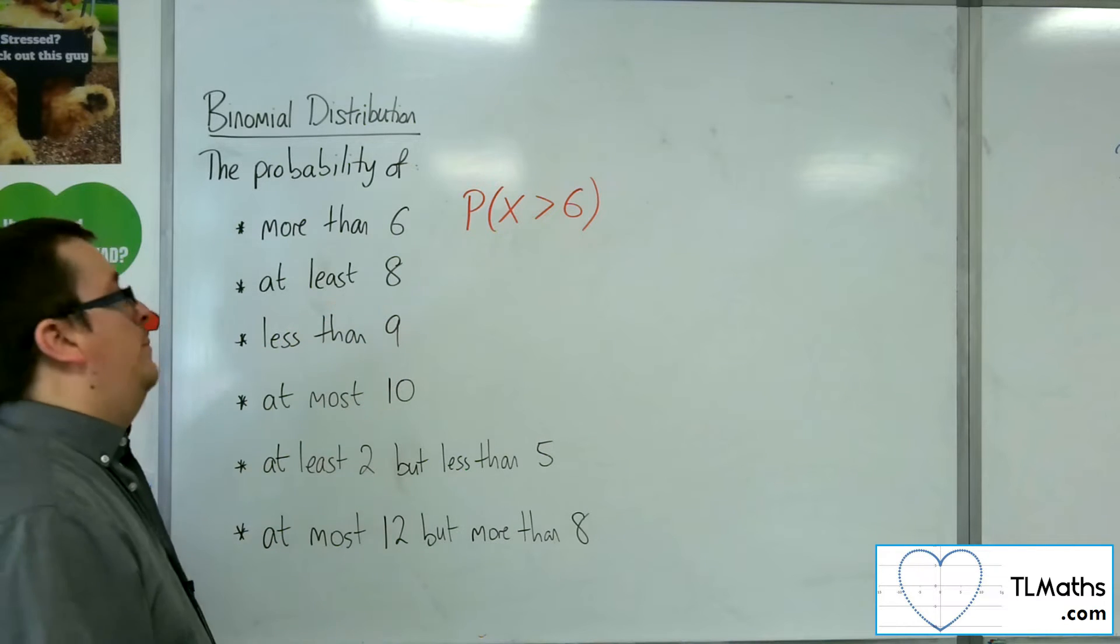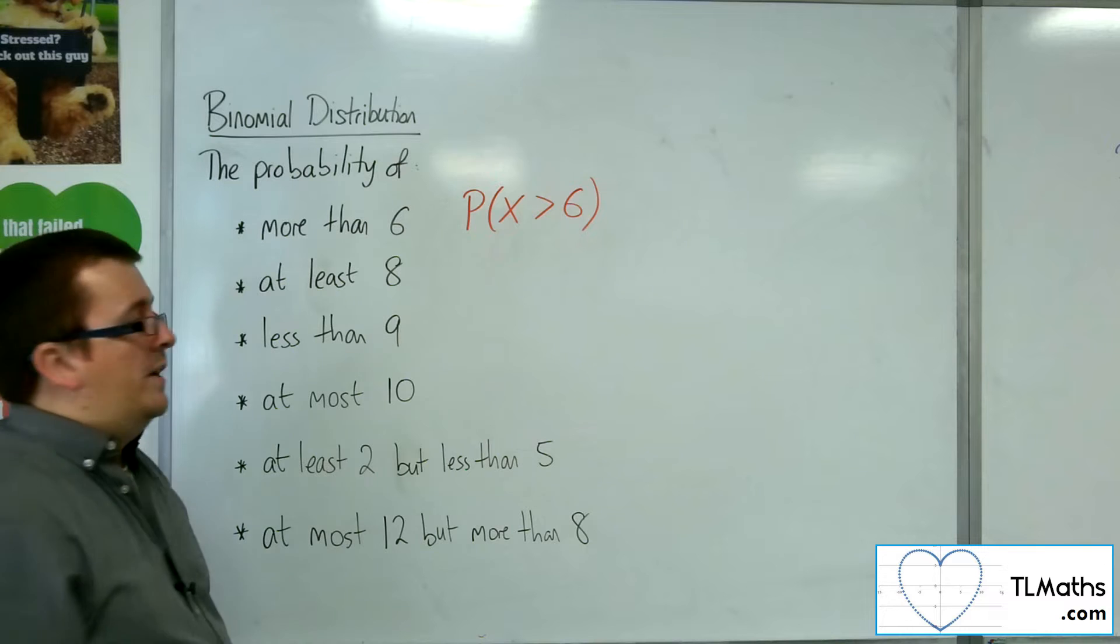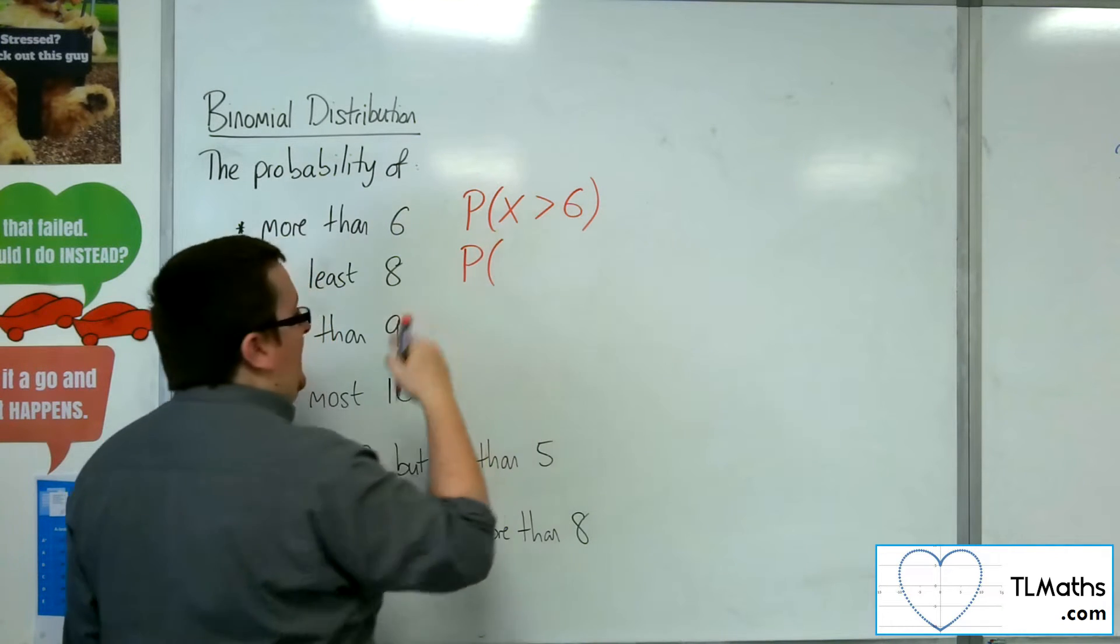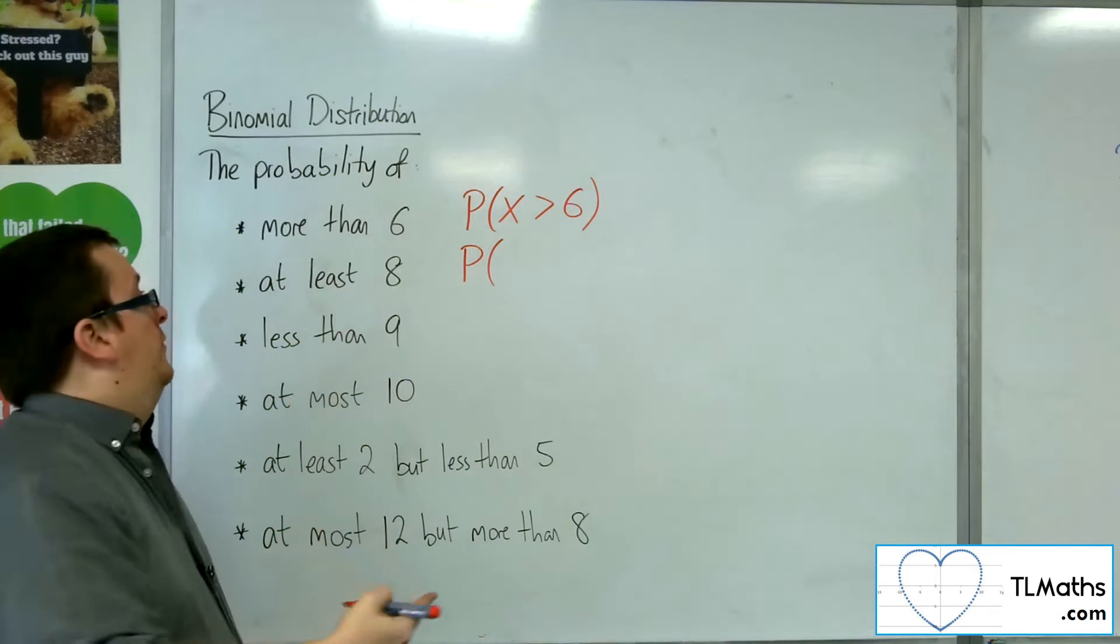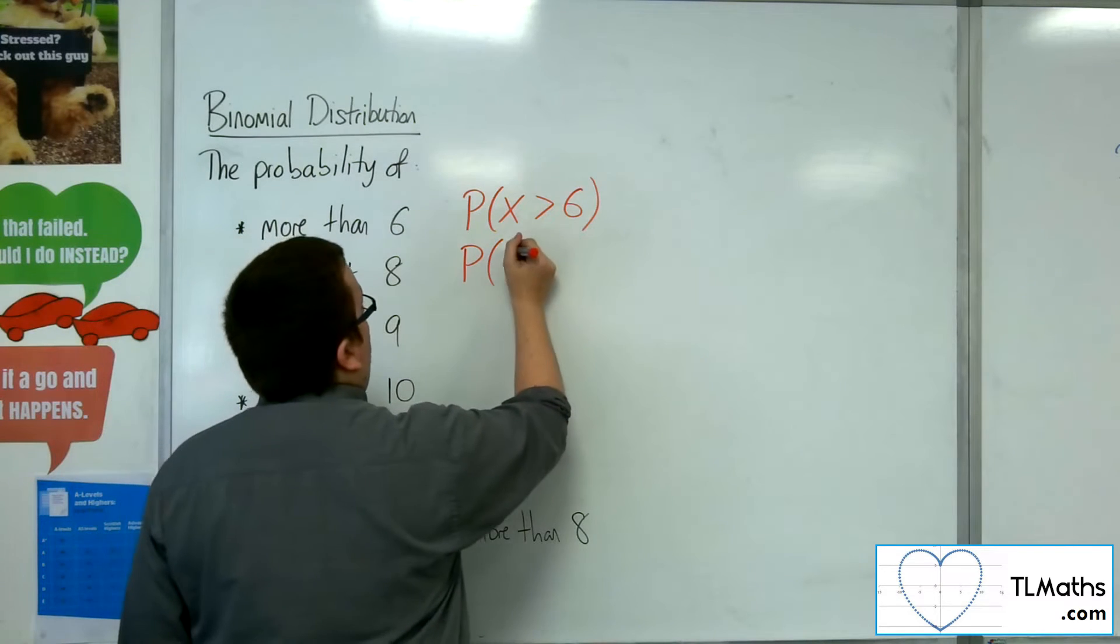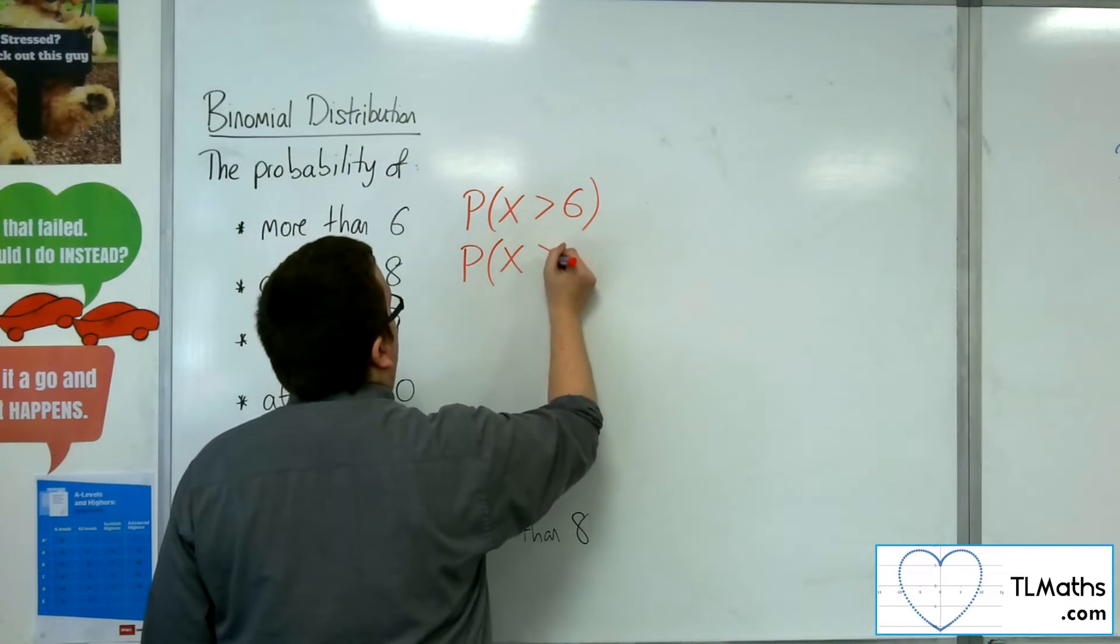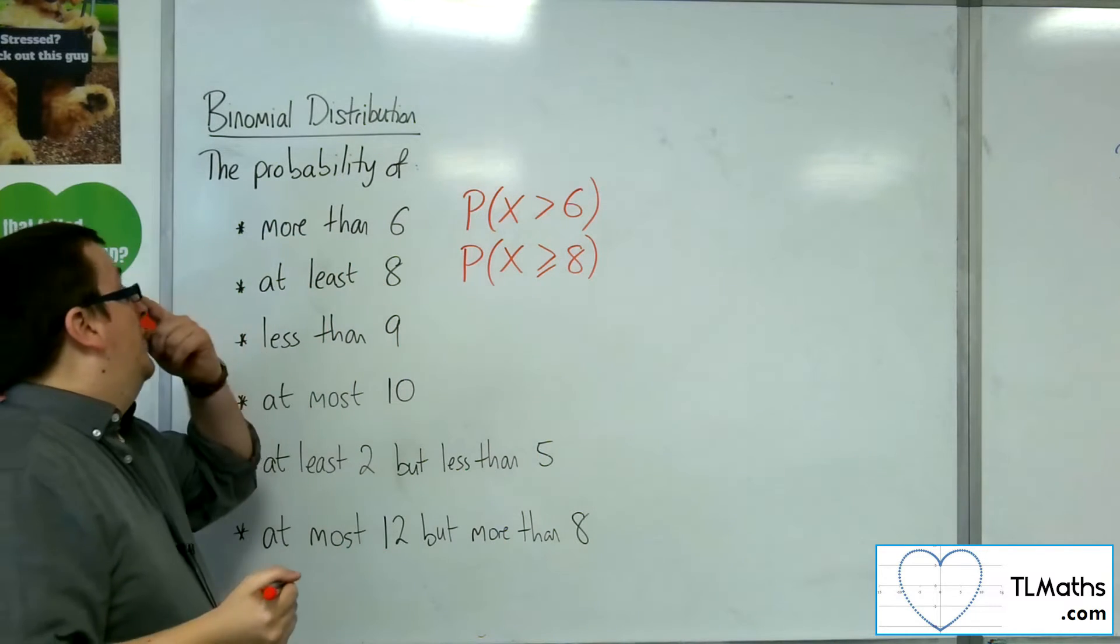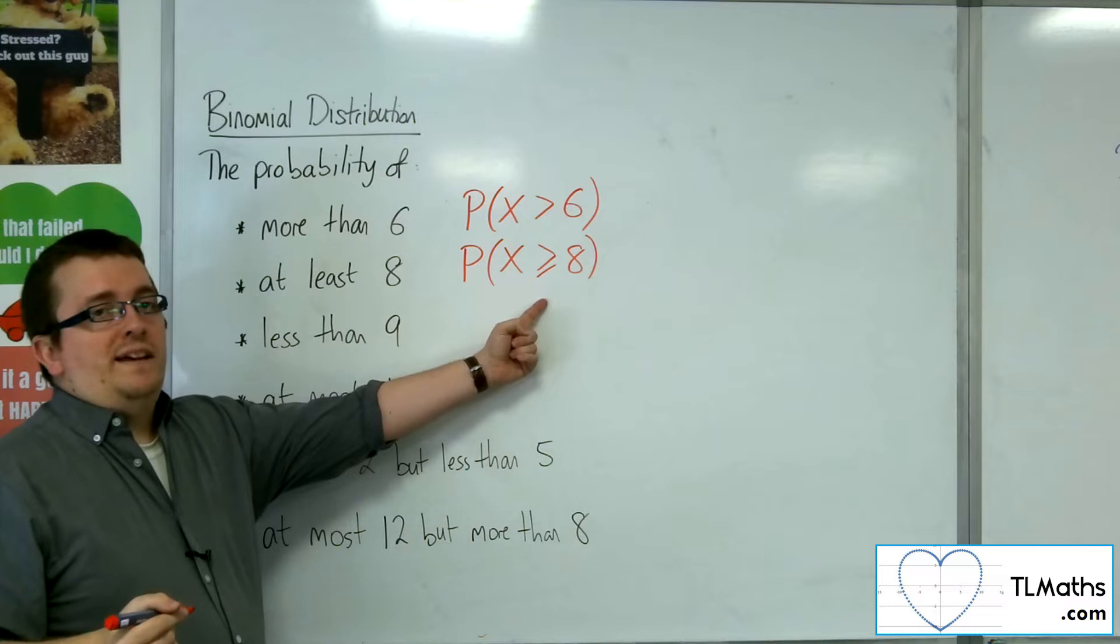I want at least 8 people to attend the party. That would mean I would want 8 or more. So at least 8 means 8 or more, so X has to be greater than or equal to 8. So at least will mean greater than or equal to.